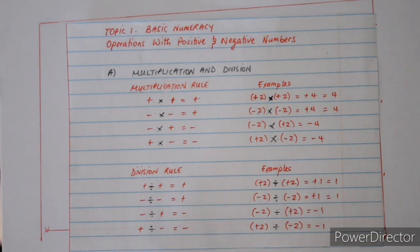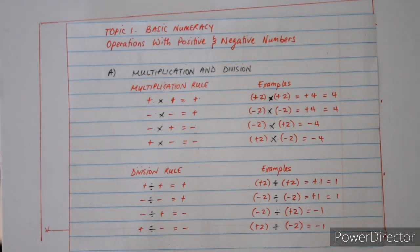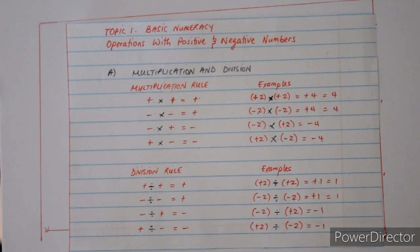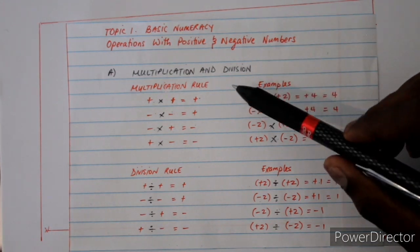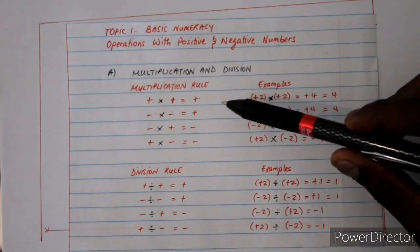Before we discuss that, you must remember that there are positive numbers and negative numbers. Before going on to addition and subtraction, it's much better we look at multiplication and division of positive and negative numbers. So let's look at the rules for multiplication and division.